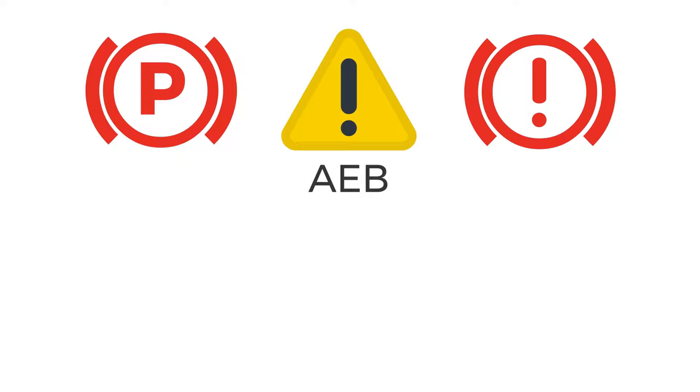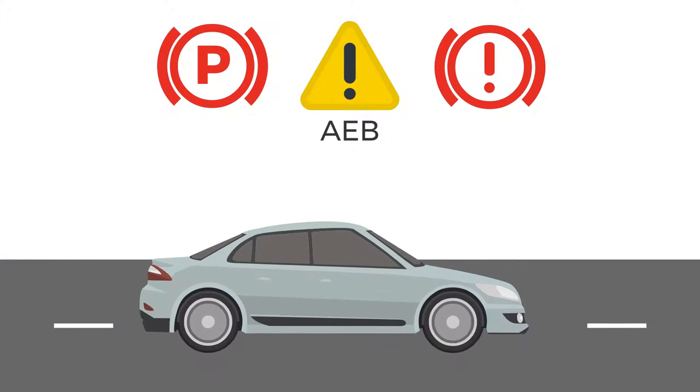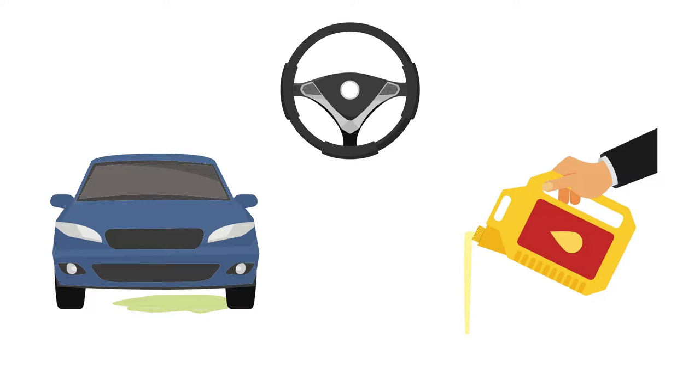Common problems with Nissan's automatic emergency braking system, AEB, include warning lights and sudden braking despite no objects to the front or rear of the vehicle. You may also encounter coolant leaks, steering wheel lock failure, or excessive oil consumption.